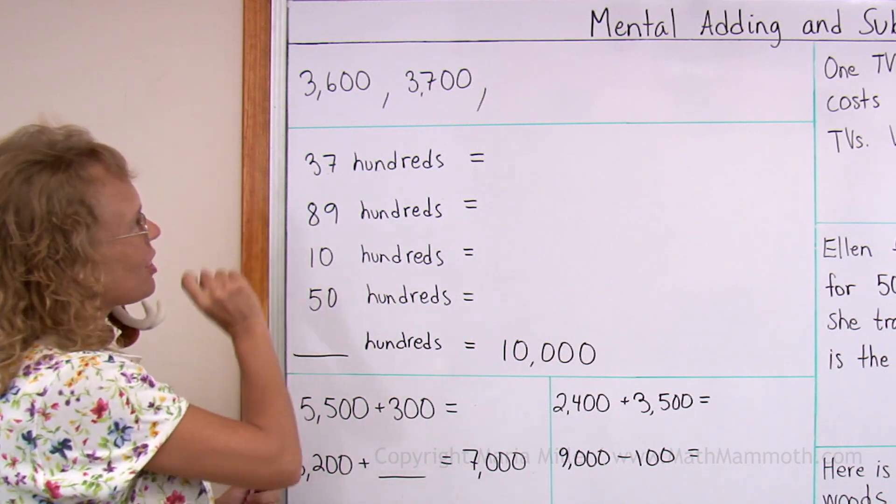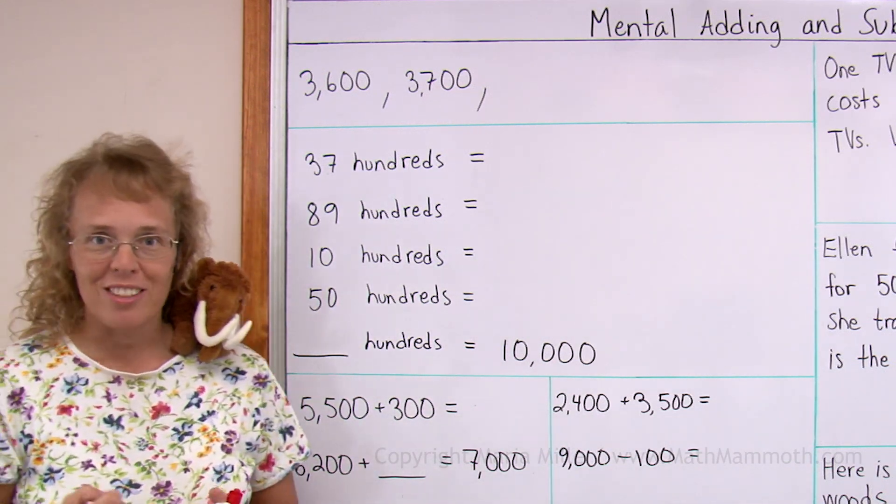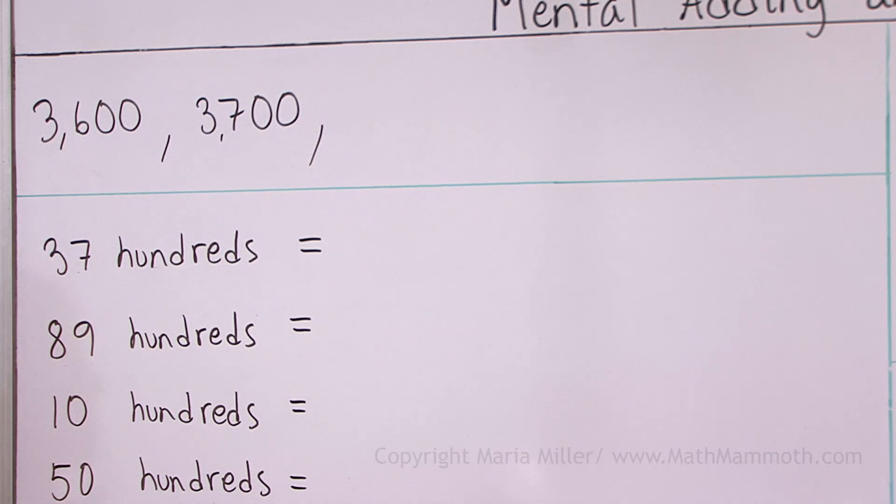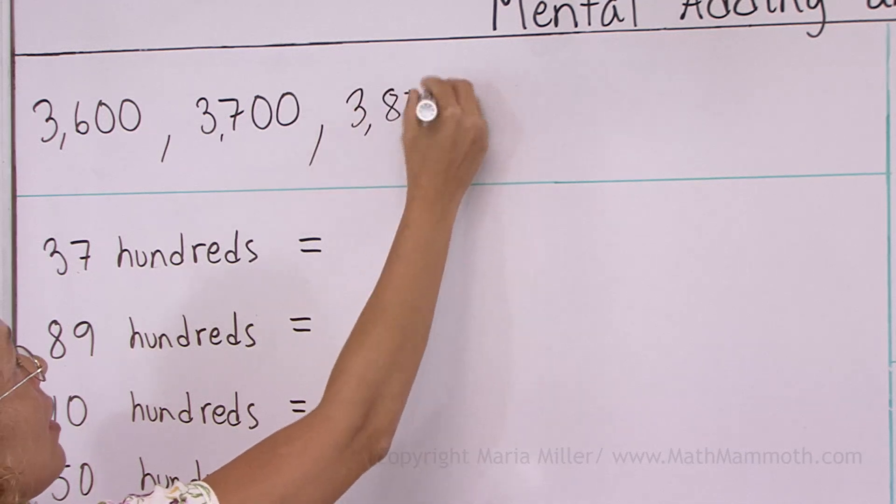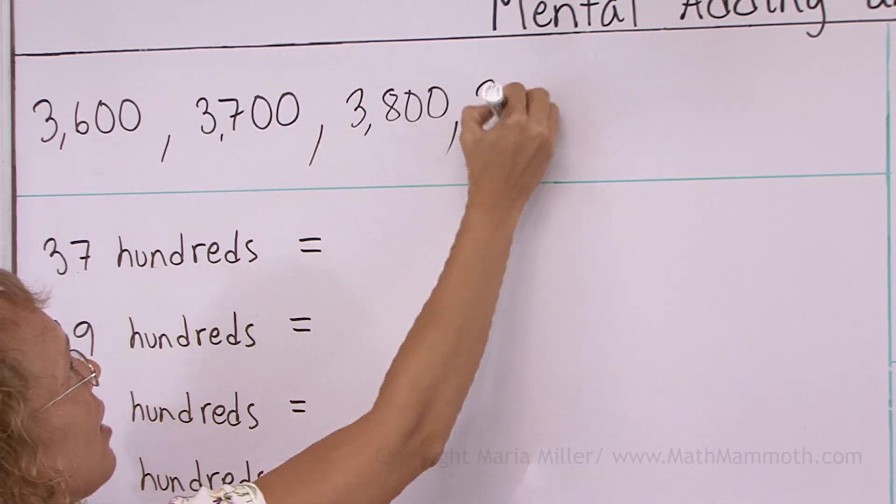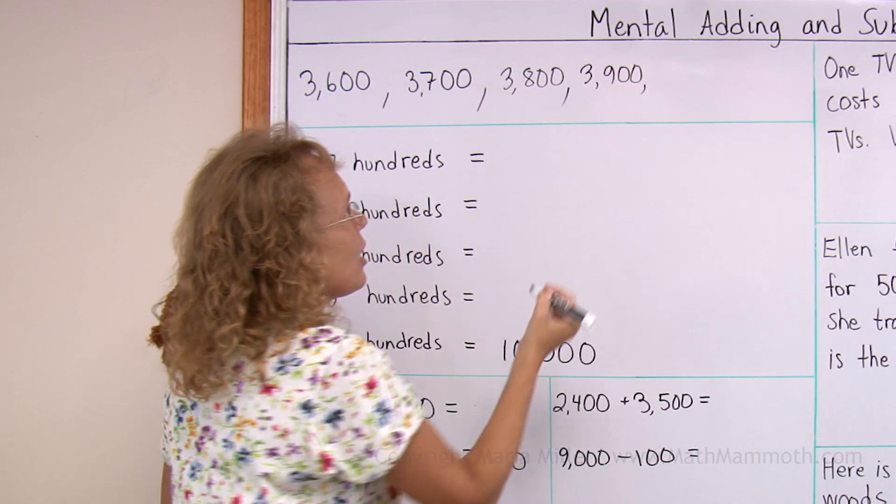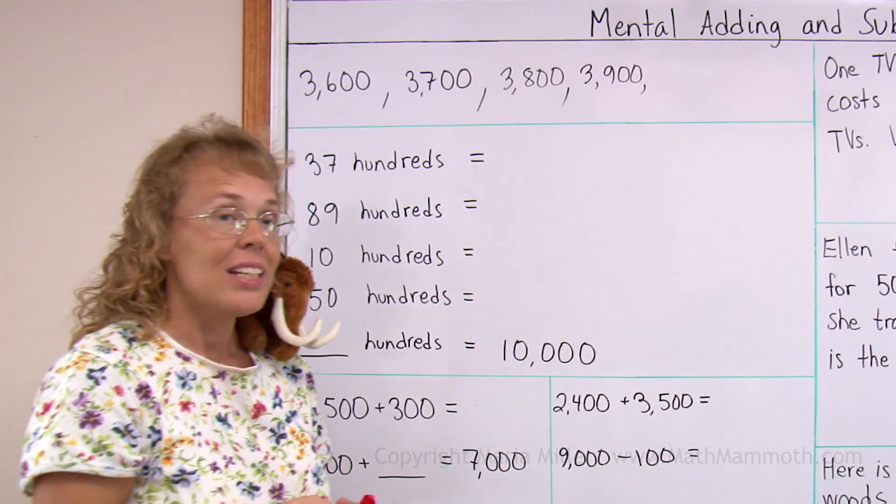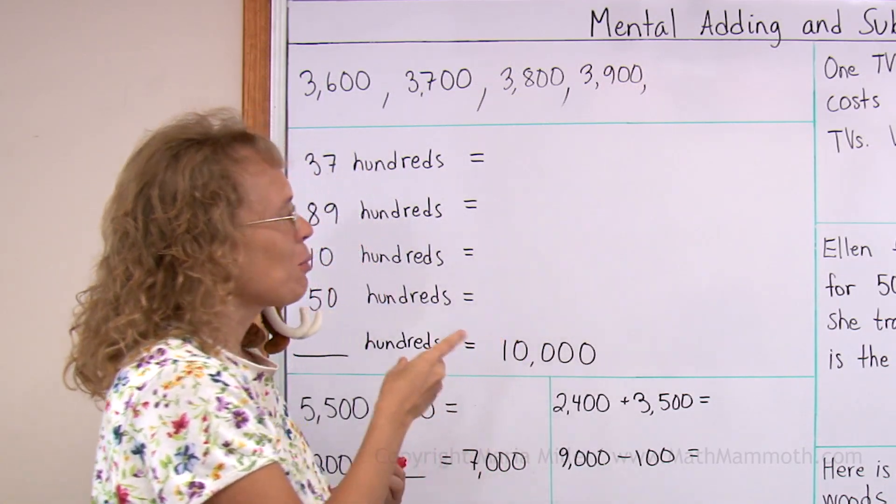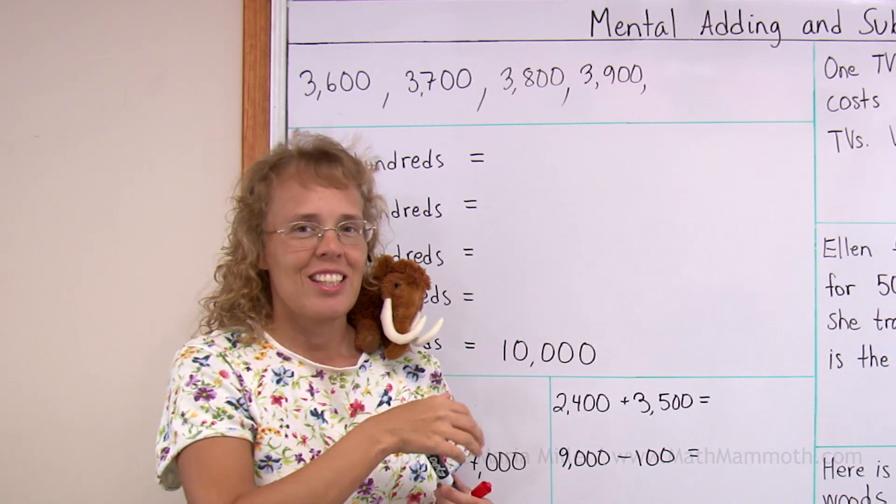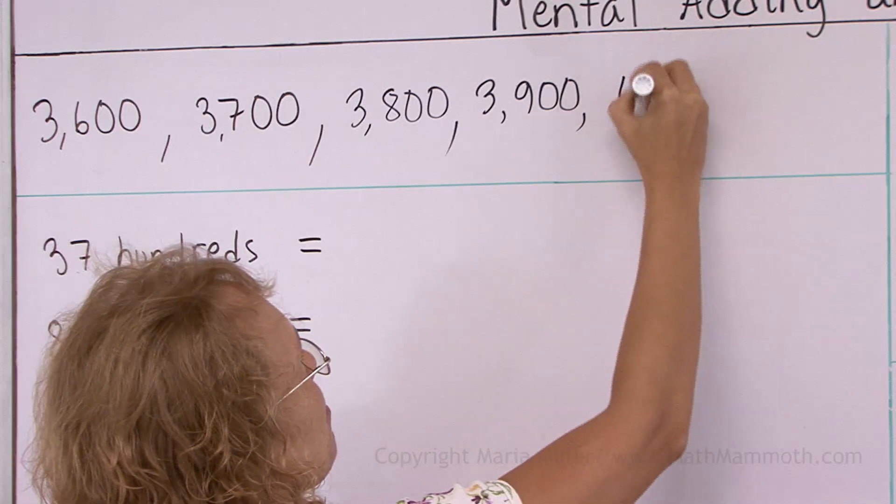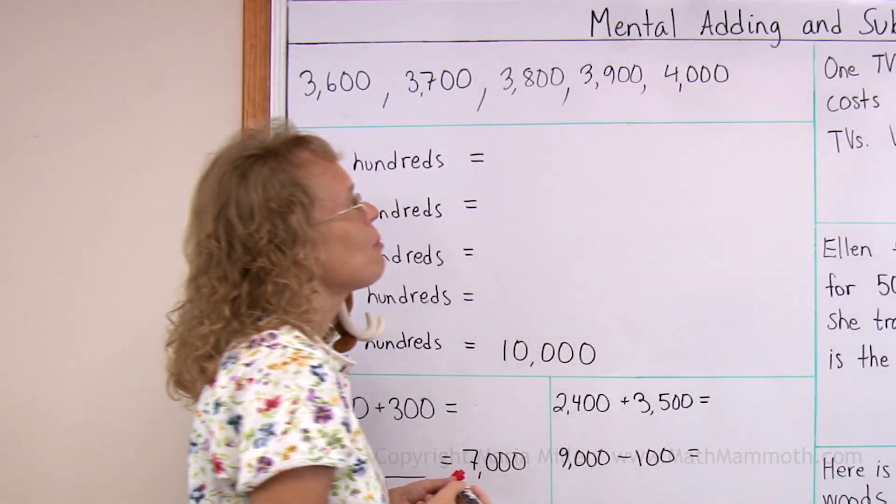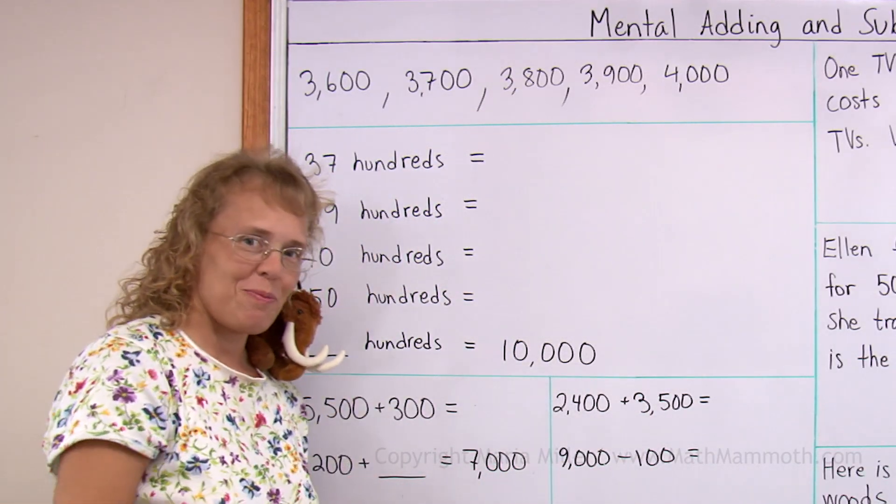Now over here first of all we are going to count by hundreds. I have 3600, 3700. So next would come 3800, right? And then would come 3900, right? And then would come... We have the 900 there. So when you add 100 then you complete the next 1000. We come to 4000. And then would come 4100 and so on.